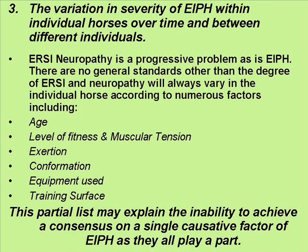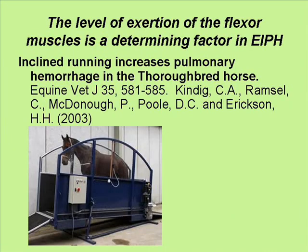This partial list may explain the inability to achieve a consensus on a single causative factor of EIPH, as they all play a part. A veterinary study which appeared in the Equine Vet Journal, 2003, shows that inclined running increases pulmonary hemorrhaging in the thoroughbred horse. This inclined running tends to stress the flexor muscles, and the level of exertion of the flexor muscles is, I believe, a determining factor in EIPH.